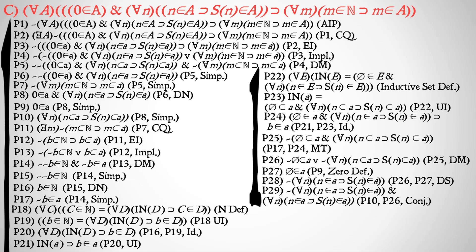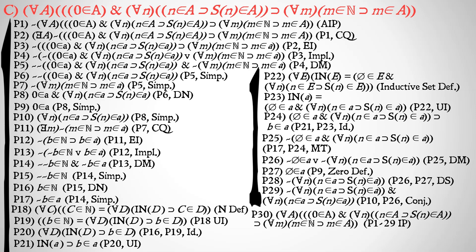That gets us our contradiction, which means we can pop out of this indirect proof and get the conclusion we were looking for: for all A, zero is a member of A, and for all N, N is a member of A implies that the successor of N is a member of A, implies that for all M, M is a member of the set of all natural numbers implies that M is a member of A — also known as the principle of mathematical induction.